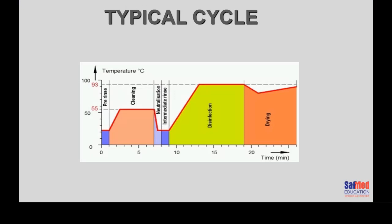Let's look at a typical cycle of the washer disinfector. We'll take all our dirty instruments, load them into the washer, and hit the start button. The cycle depends on which program you choose. But generally speaking, most programs start with the pre-rinse — no detergent, and as you can see, the temperature is a little bit lower. The bar on the side tells you the temperature; the bar on the bottom shows the time. We start with the pre-rinse.